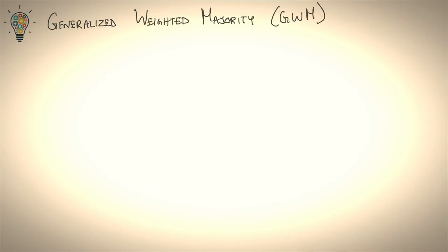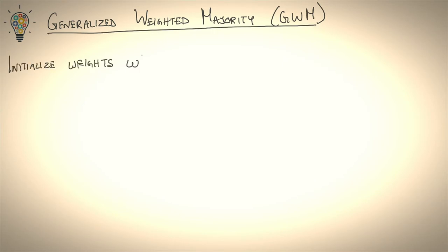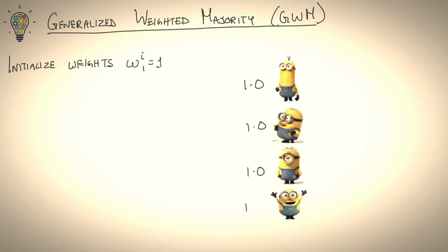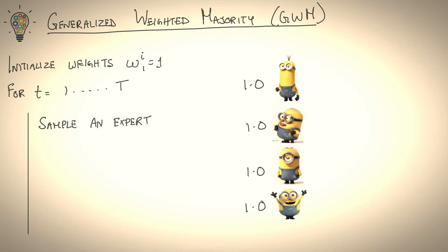What is the generalized weighted majority algorithm? It's, as the name suggests, a generalization of the randomized weighted majority algorithm we looked at last lecture. You begin by initializing weights for each expert to be 1.0. Then, for every round t equal to 1 to T, you're going to sample an expert from the probability distribution induced by the weights.